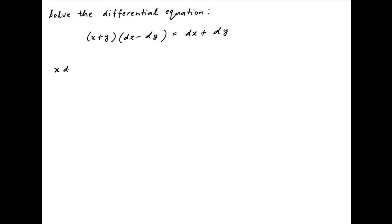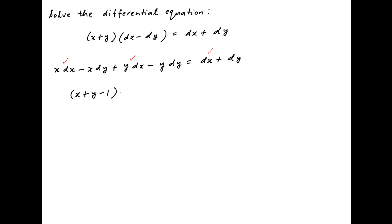Opening up the left hand side of the given differential equation, we get x dx minus x dy plus y dx minus y dy is equal to the right hand side, which is dx plus dy. Now collecting all terms with dx on the left hand side and all terms with dy on the right hand side, we get (x + y - 1) dx is equal to (x + y + 1) dy.